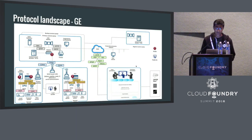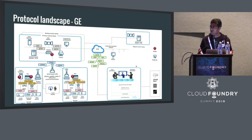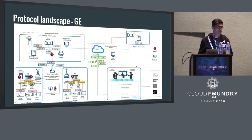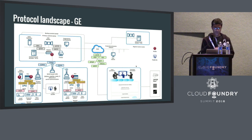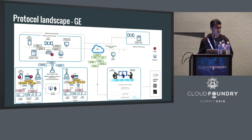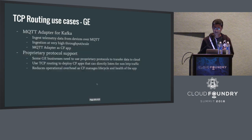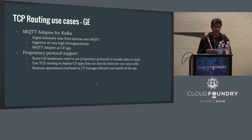Last year I presented a picture discussing GE's motivations for TCP routing. I won't get into all the details again, but I want to highlight that like any IoT use case, GE has interest in multiple non-HTTP protocols. You can see a bunch of non-HTTP protocols listed here. Some have fallen out of favor over the years, even in GE, but some are still valid.